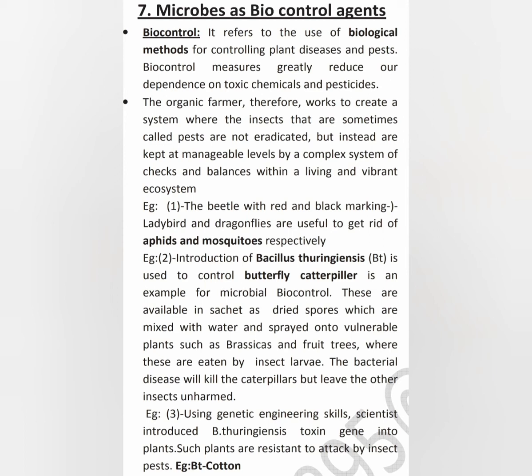Spores of Bacillus thuringiensis are sprayed on the bacteria. The bacterial toxin will kill the caterpillars but leave the other insects unharmed. Using genetic engineering skills, scientists introduced the Bacillus thuringiensis toxin gene into plants. Such plants are resistant to attack by insect pests — for example, Bt cotton.